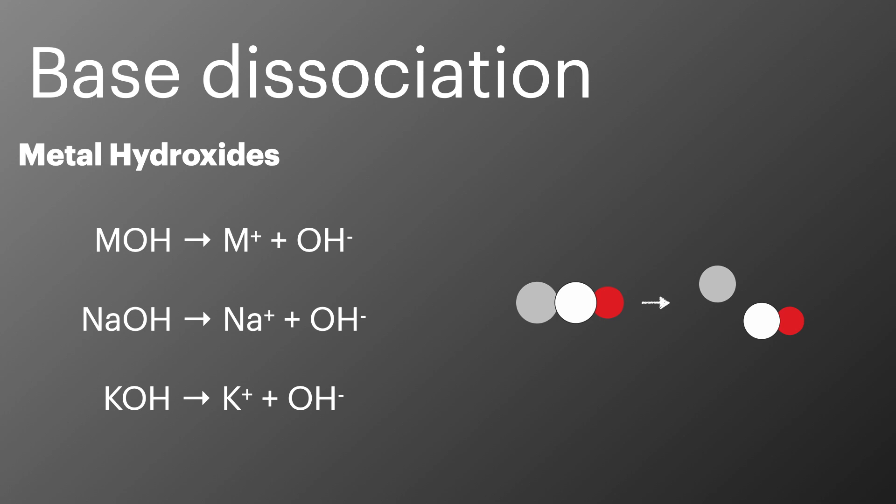Other bases, weaker bases such as ammonia, don't need to dissociate before they accept a proton. In the case of ammonia it gains the proton and forms the ammonium ion NH4 plus.